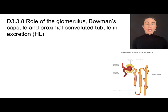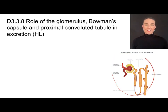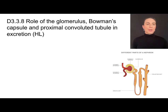Inside each one of our kidneys we have almost a million of these filtering units called nephrons, and there's a lot of important stuff that goes on in there. So let's draw one so that we can talk about the anatomy.